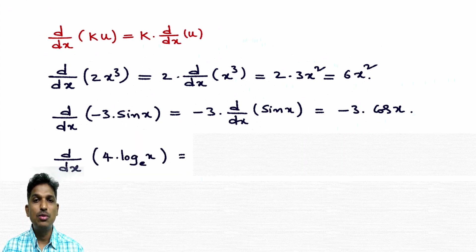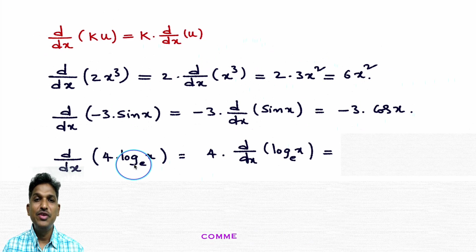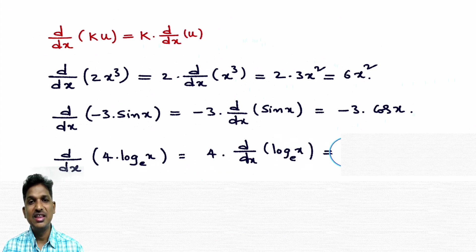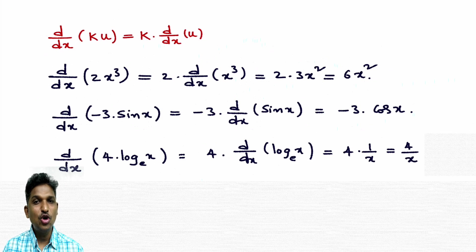One more problem: d/dx of 4 into log x base e. It looks like d/dx of ku. As per the formula, take the constant outside and differentiate the function: 4 into d/dx of log x base e. Derivative of log x base e is 1/x. So 4 into 1/x is 4/x.